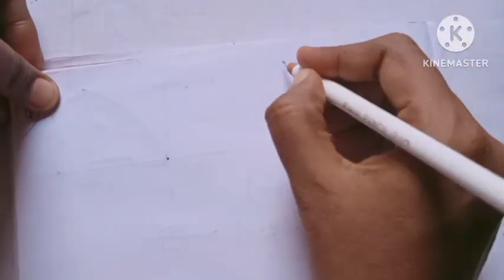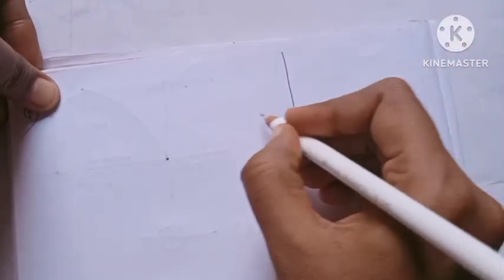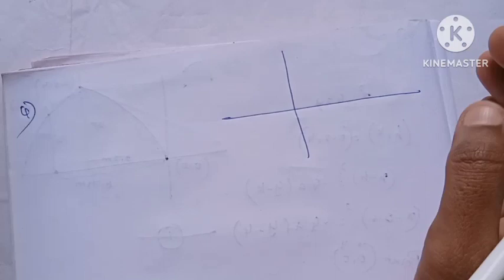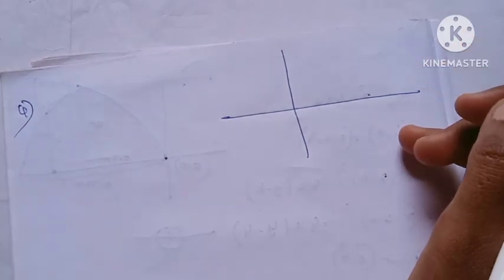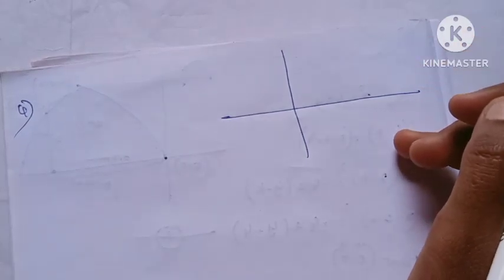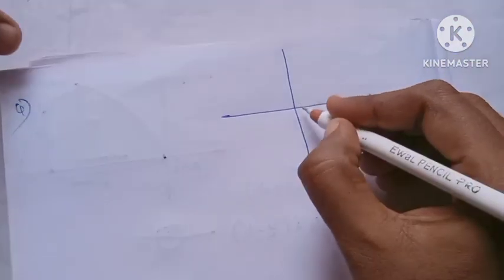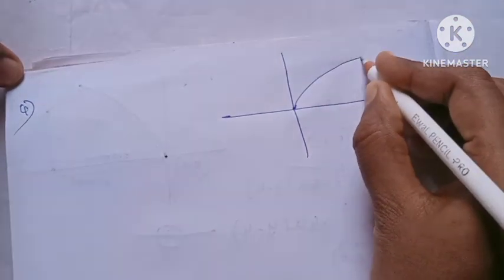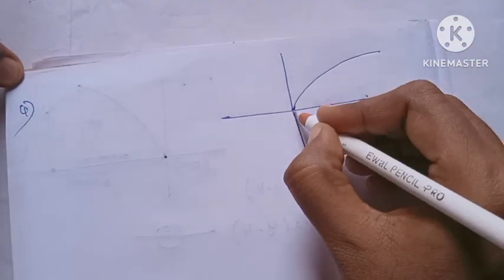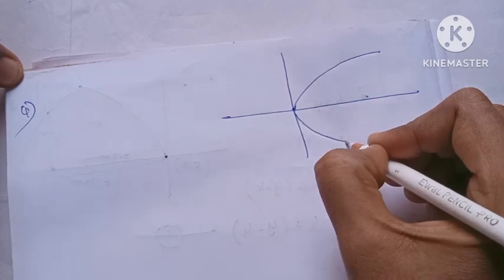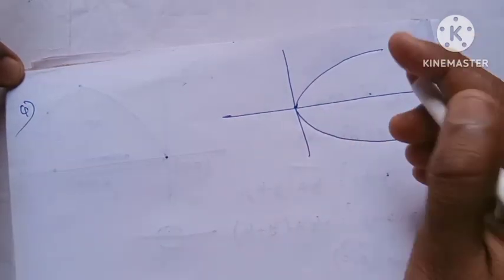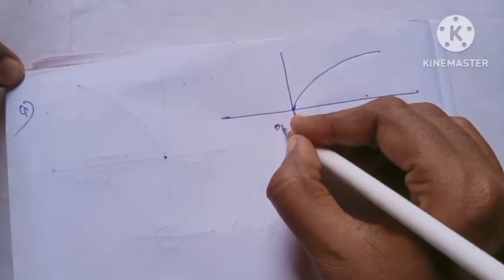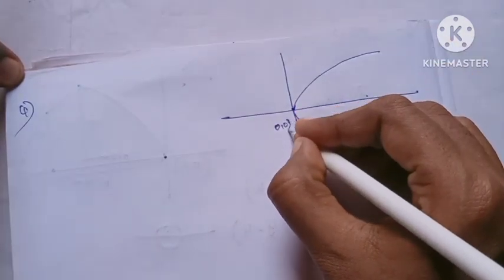For the first question, the x-axis is the axis of symmetry. Since the axis is along the x-axis and the vertex is at the origin, the vertex is at (0, 0).